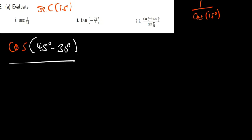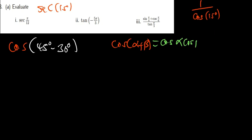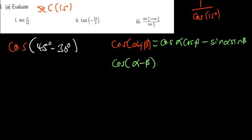Here I can use the sum and difference formulas. For cos(α + β), it equals cos α · cos β minus sin α · sin β. For cos(α - β), it equals cos α · cos β plus sin α · sin β. In this case I have minus, so I'm going to use the second formula — the one for alpha minus beta.